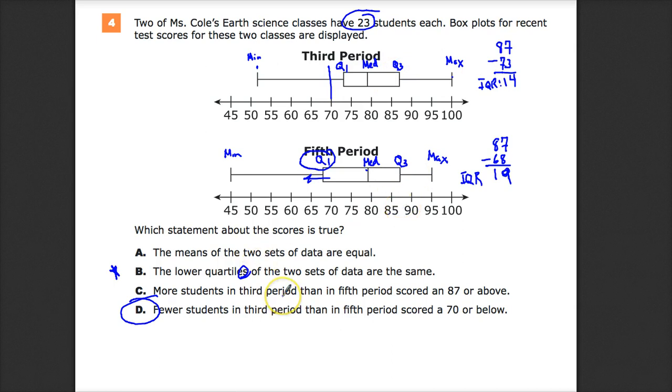And then for D, I can say, yeah, fewer students, because all of Q1 is not included in 70 and below for third period. For fifth period, somebody from Q1, or it's actually Q2, Q1 to the median would be quarter two, is also included. So that's more people. So we have to look at groups of things and how many fall into that group rather than the specific values that we are trying to find.